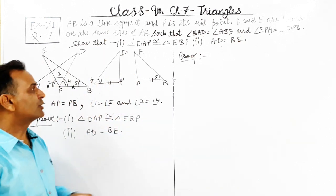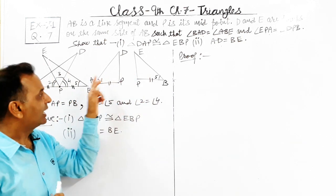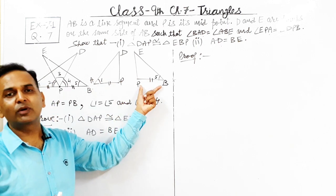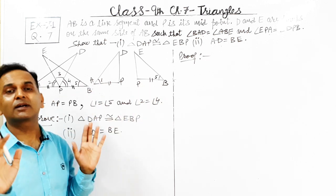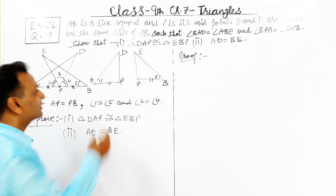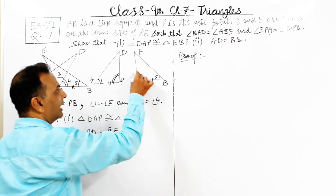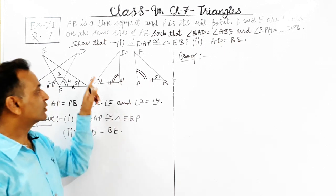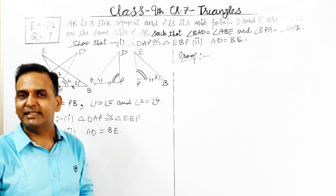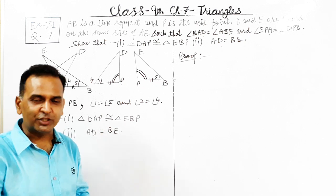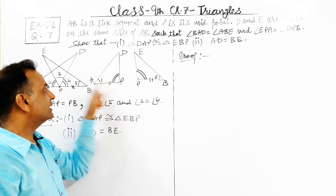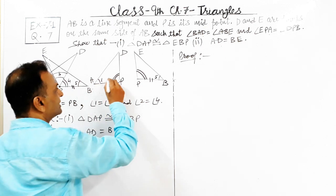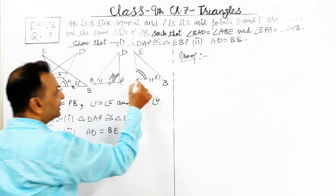In these separate figures we observe: angle one and angle five are equal — given. AP and PB are equal because P is the midpoint — so two points are already established. We need only the third point: this angle. If we can prove angle DPA equals to angle EPB, then by using the Side-Angle-Side congruence criteria we can prove the triangles congruent. Angle DPA is the combination of angle two plus angle three. Angle EPB is angle three plus angle four.